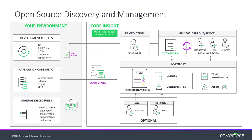Code Insight also has an alerting framework in place. Today, this is focused on vulnerabilities and the fact that new ones are being discovered daily. Code Insight keeps track of every inventory item across all projects, such that if a new vulnerability is discovered and associated to any inventory item within the system, it will alert you to this and let you know that there is now an item within a project that has a vulnerability and action may need to be taken.